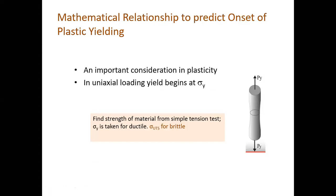In the second lecture, we are developing mathematical relationships to predict the onset of yielding. In the elastic region, it is a straight line — stress is proportional to strain and we know the modulus of elasticity. But when plastic deformation starts, it is no longer a linear relationship. So how will the material yield, and how will the mathematical relationship be developed? This is the question addressed in today's lecture.